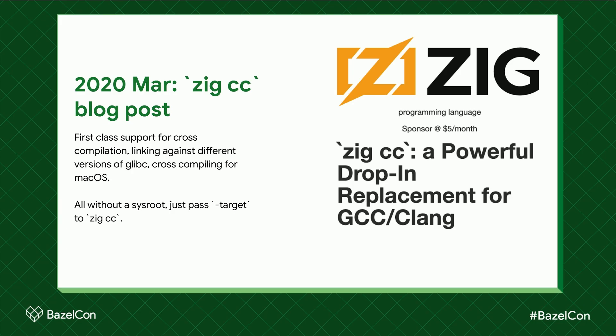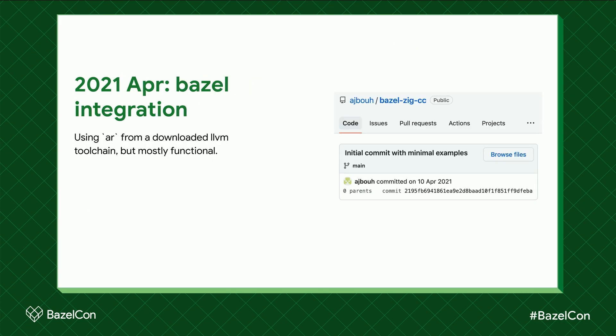Unfortunately it's not enough to just have a compiler — we also need the glue to stick it all together. It took another year for that to come along. In April, Adam Buhengal created a proof-of-concept Bazel integration; it's downloading the LLVM toolchain for the ar tool as it's still missing in Zig at this point, but it can compile basic C and C++ code with Bazel. Around this time, my colleague Mateus discovers these two things and starts experimenting with them for his personal projects and gets involved with zig cc.